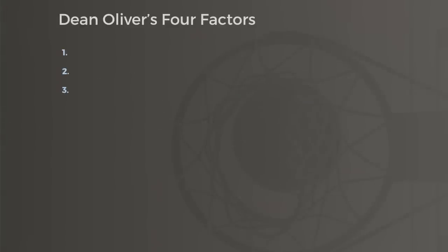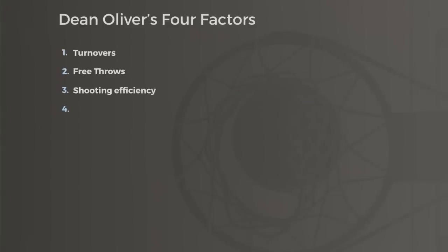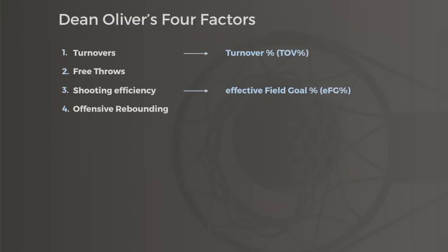Then there are Oliver's four factors: turnovers, free throws, shooting efficiency, and rebounding. With some simple adjustments intended to model team success, turnovers are adjusted to turnover percentage — that's just the percentage of possessions that end with a turnover. Shooting efficiency is captured by effective field goal percentage, which we discussed in part two. He used free throws per field goal attempt as a way to measure how often a team got to the line. And finally, offensive rebounding to see how often a team keeps a possession alive.